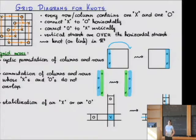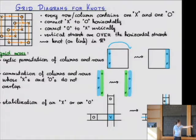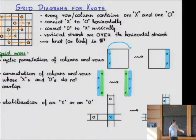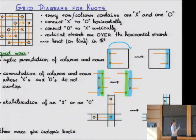There is another operation which increases the size of the grid, called stabilization. You choose a point where there is a marking — an X or an O — and introduce one extra column and one extra row, changing the markings just in the place where the original marking used to be. I put X's and O's everywhere except the upper left corner of the new grid. This gives four different ways to do it, and depending on whether you do it with an O or an X, this gives eight different ways to do stabilization.